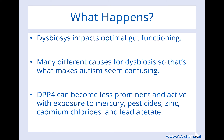DPP4 can become less prominent and active in the gut with exposure to mercury, pesticides, zinc, cadmium chloride, lead acetate, and a variety of other things — basically toxic exposure or accumulation of toxins in the body. Maybe your child wasn't exposed to some major toxic event, but perhaps their body is not good at detoxing the everyday things that need to be detoxed, so there's an accumulation. This is again why autism can seem confusing — there can be a variety of reasons as to why DPP4 is less prominent and less active in someone's gut.